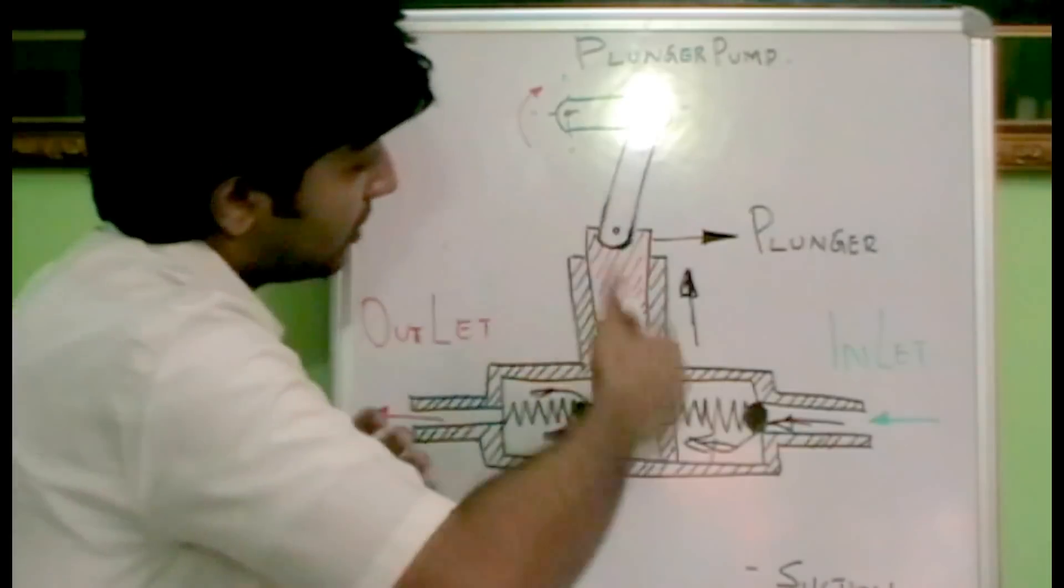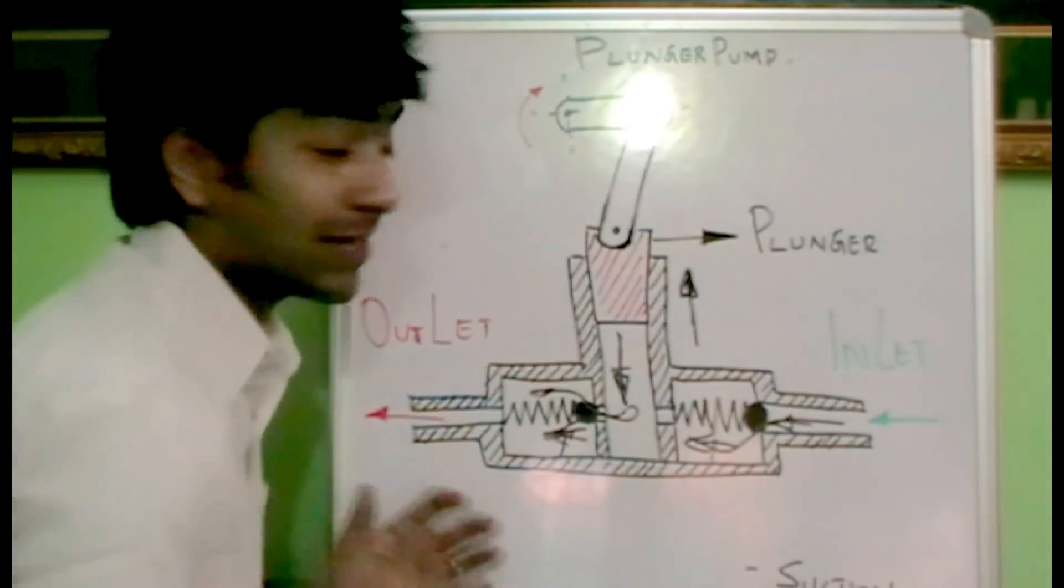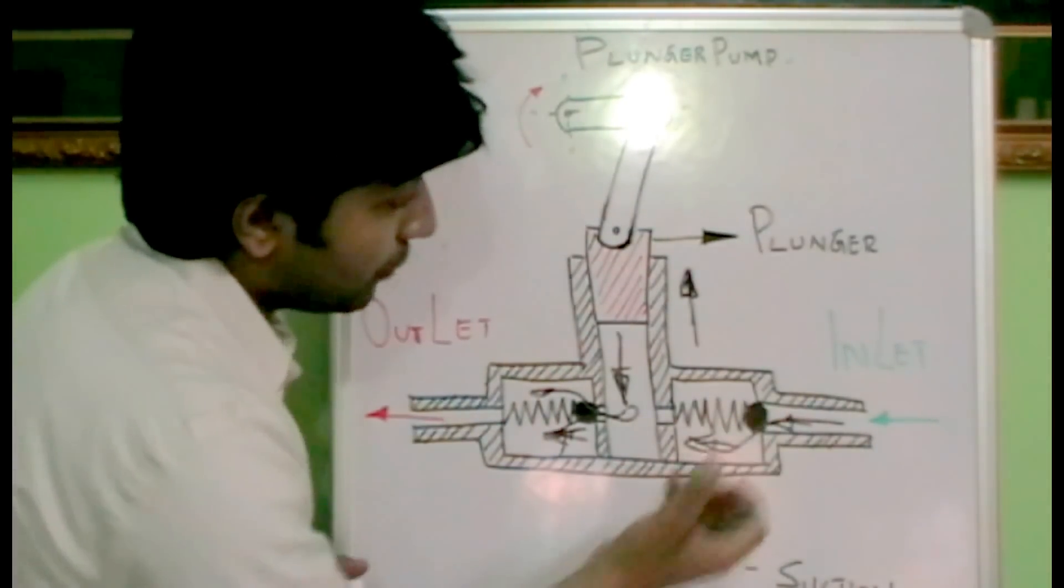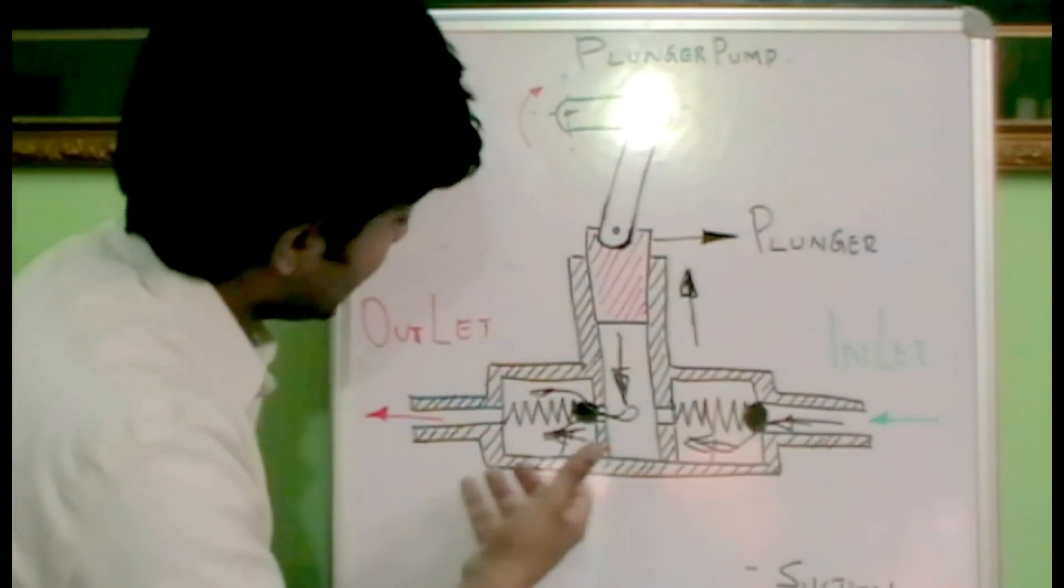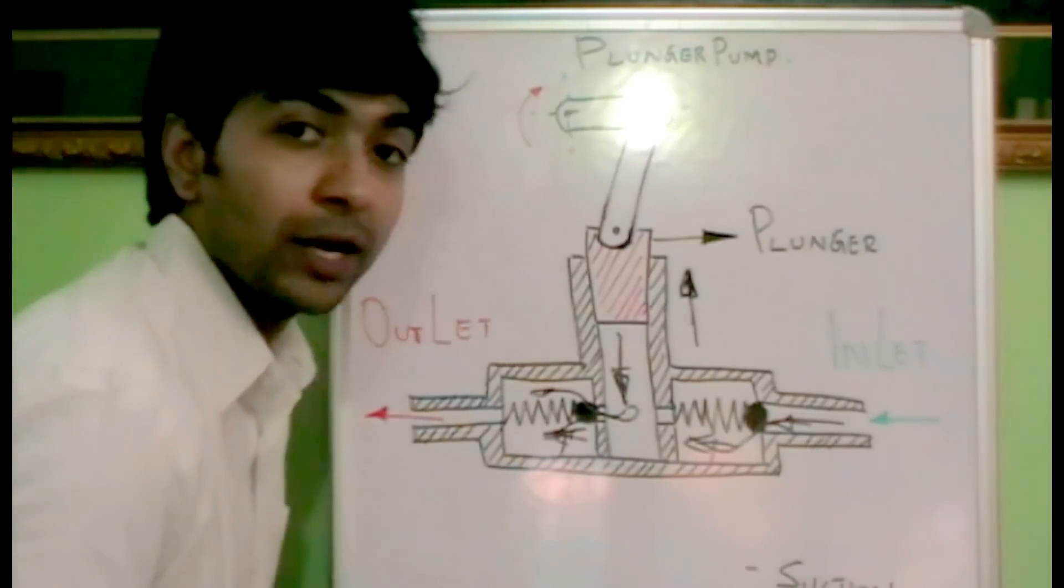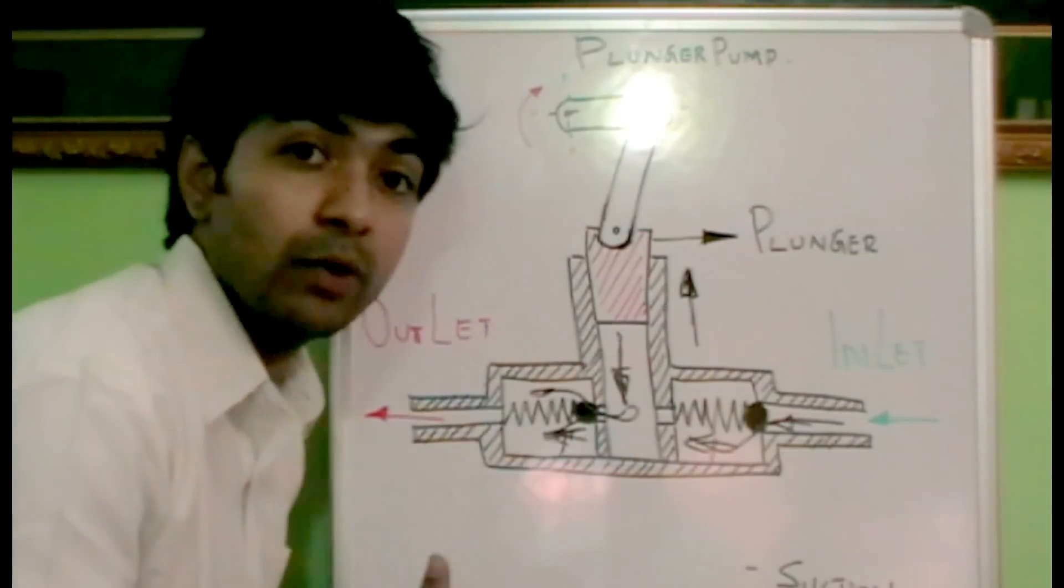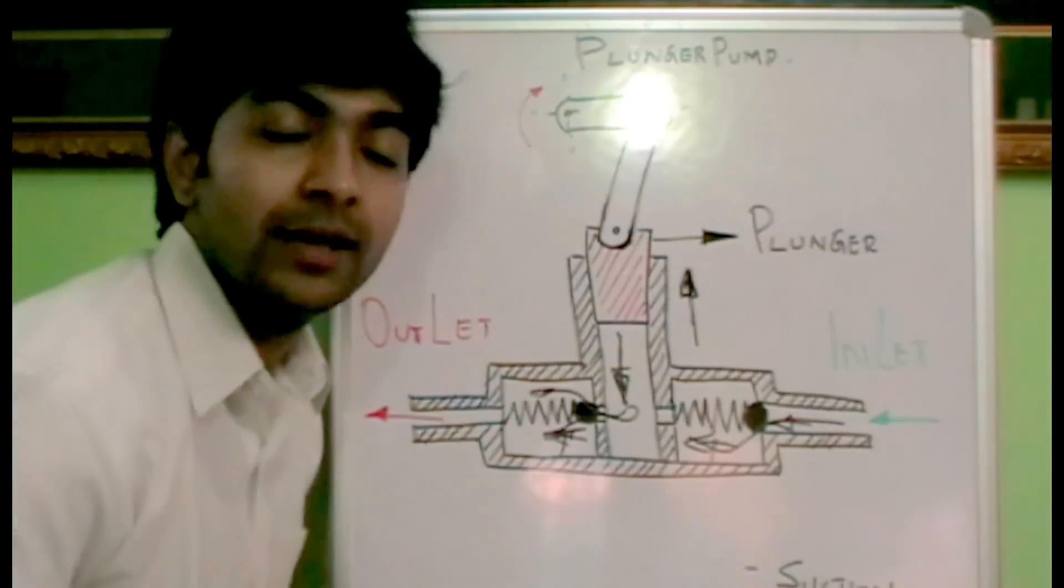That's how the reciprocation of the plunger results in the suction of oil through the inlet and pressurized outlet of the oil through the outlet port. I hope you understand how a plunger pump works. Thank you.